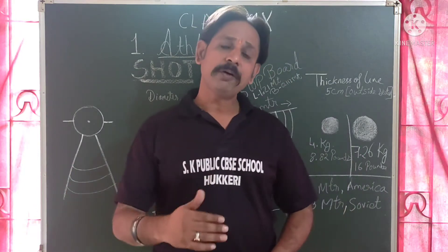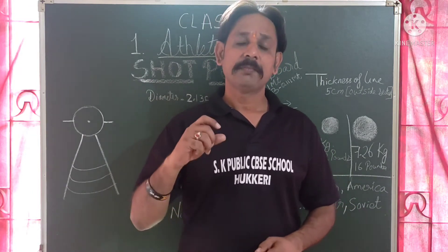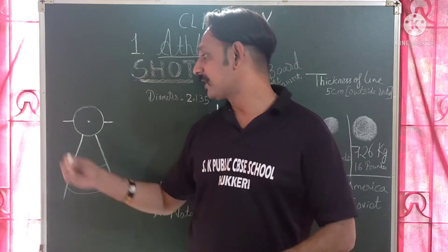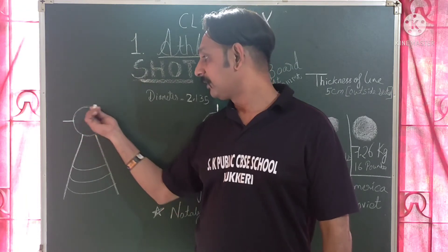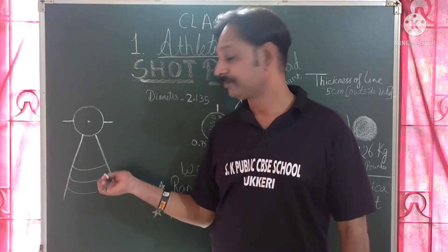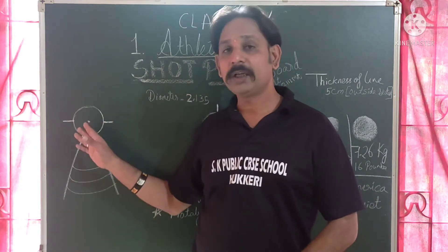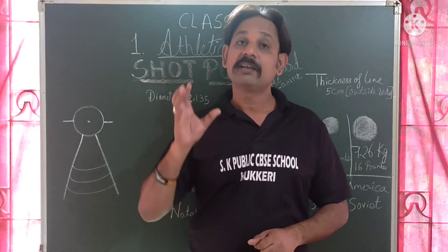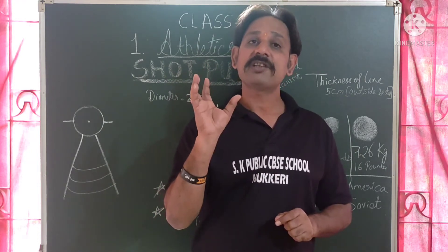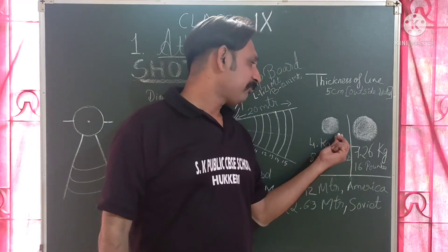In field events, we will begin with shot put. Before we start the explanation about measurement, let me give you a short overview of the basic rules of shot put. As you can see here, this is a shot put circle and this is the arc. You can see two side lines — the throw has to come inside this circle. Shot put is a metal iron ball which has some weight, and there are weight categories for boys and girls.